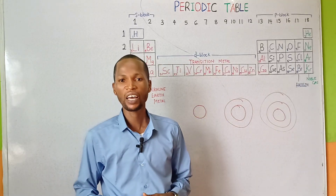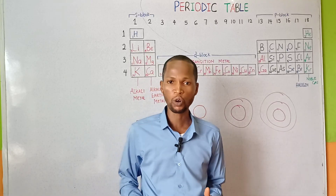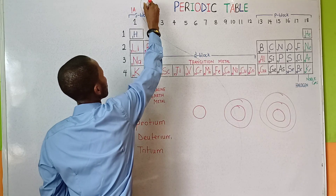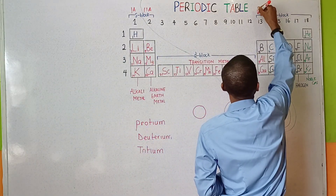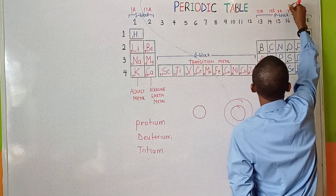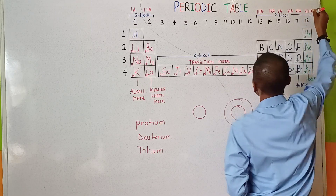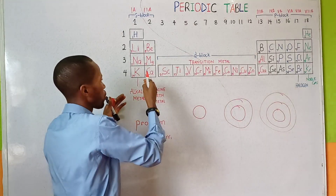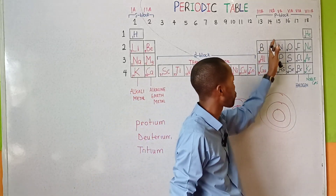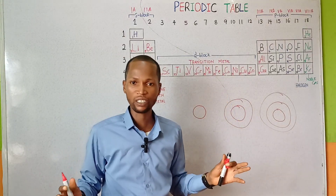The main group A of elements in the periodic table consists of eight groups, which are expressed in Roman numerals: 1A, 2A, 3A, 4A, 5A, 6A, 7A, 8A. The main group comprises of group 1, group 2, excluding the transition metals, then group 3, 4, 5, 6, 7, 8A. So the main group contains just eight groups.